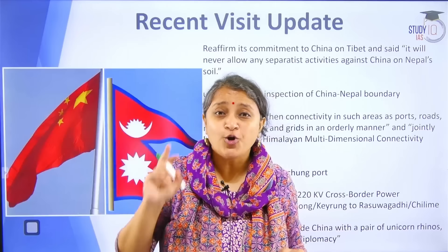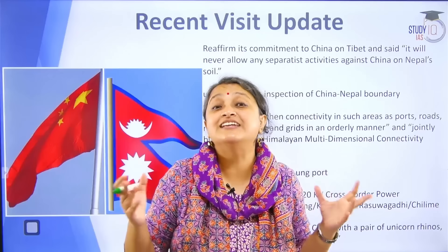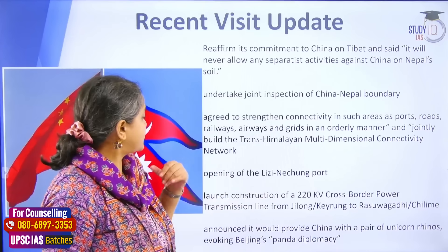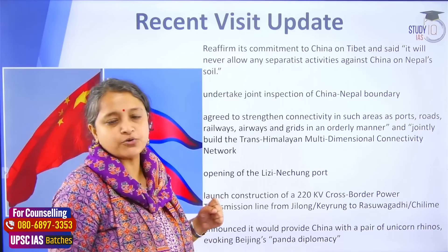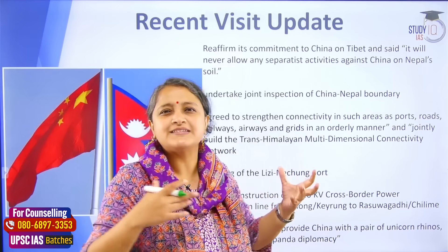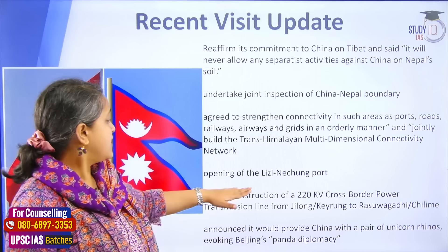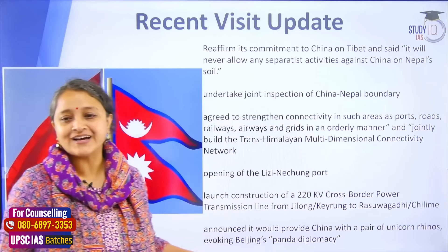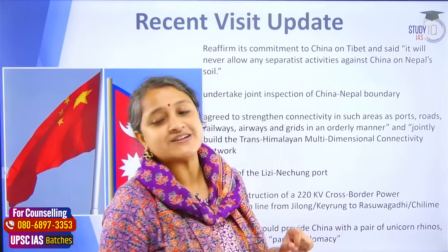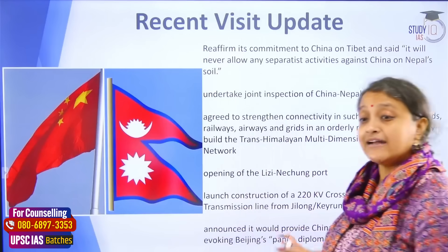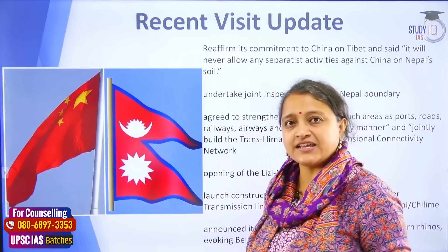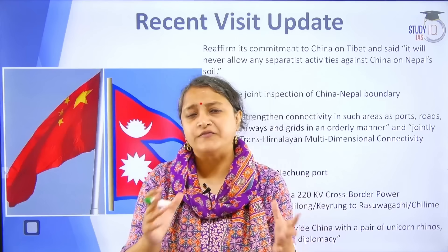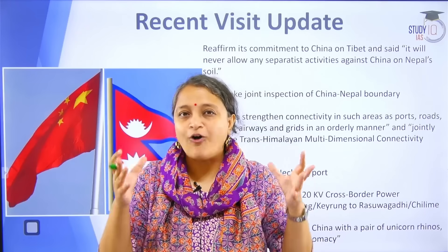These projects will be studied further. It is worth remembering that China gave Nepal the temptation of BRI in 2017, and since then feasibility studies have been ongoing — nothing concrete has been seen yet. Another development was discussion about opening the Jilong-Kerung port to increase connectivity and boost passenger services. There was also discussion about construction of a cross-border power transmission line. And finally, the most interesting development was that Nepal announced it would gift China one pair of unicorn rhinos as part of China's panda diplomacy.